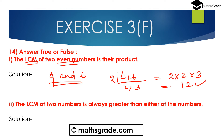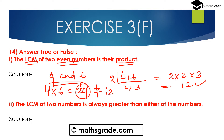So LCM is 2 multiplied with 2 multiplied with 3, which is 12. But the statement says the LCM of 2 even numbers is their product. The product of 4 and 6 is 24. Since 24 is not equal to 12, the LCM is not equal to the product. So this statement is false.